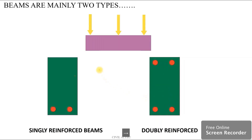We will consider the longitudinal section. In this longitudinal section, the top is load active. The bottom fiber is in tension and the top fiber is in compression.